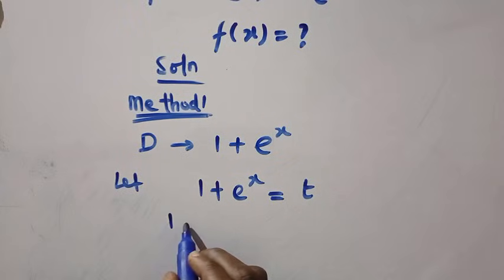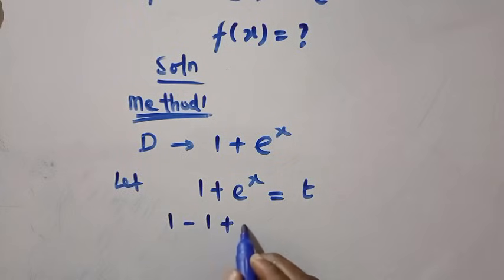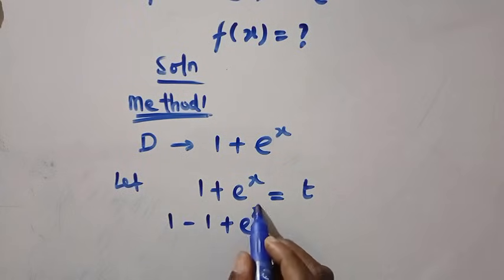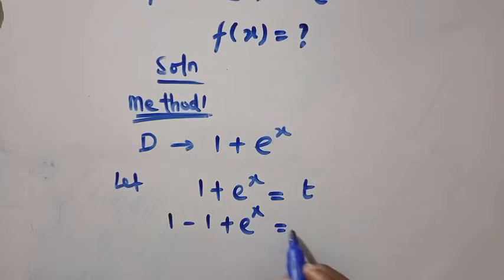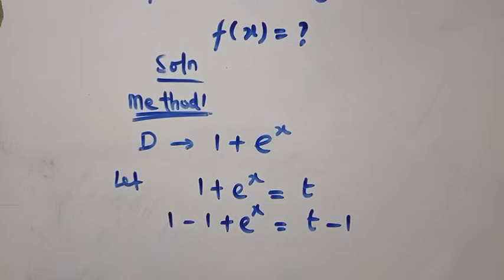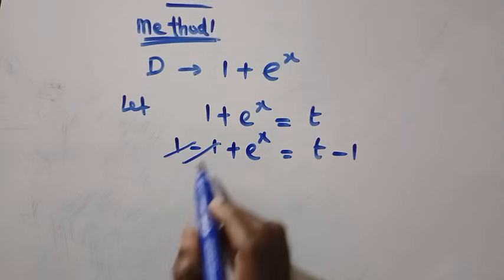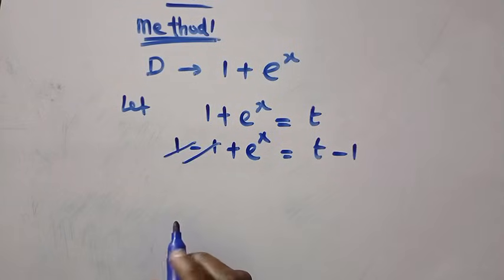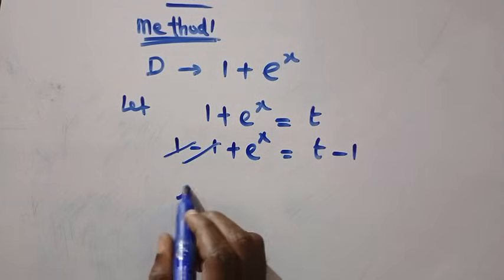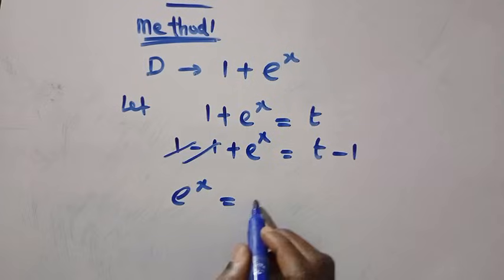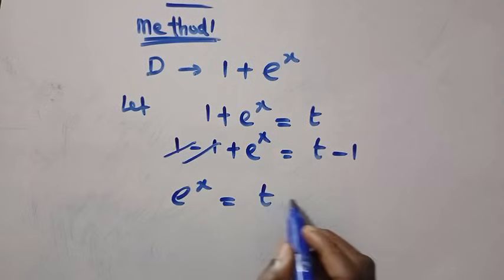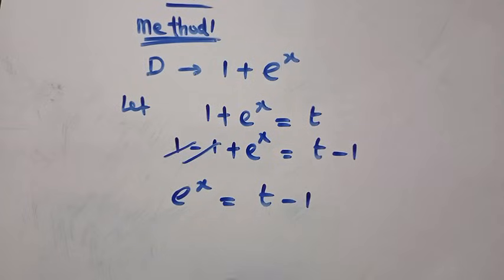if I let 1 plus exponential of x equal t, and subtracting 1 from both sides, we have 1 minus 1 plus e raised to the power of x equals t minus 1. With this, the plus 1 and minus 1 cancel, and we have e to the power of x equals t minus 1. This is just a substitution and a very simple step.